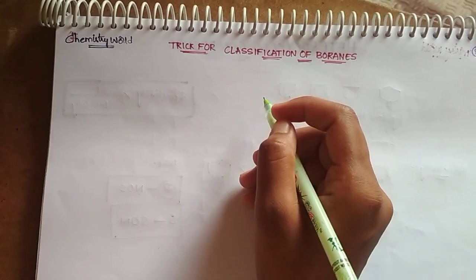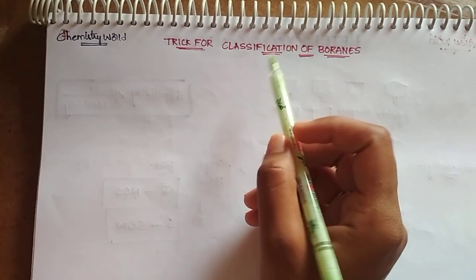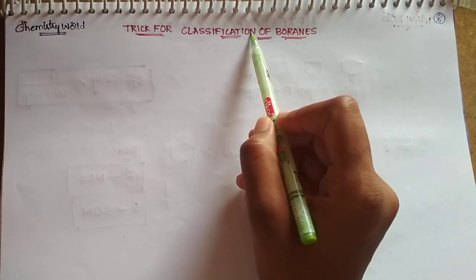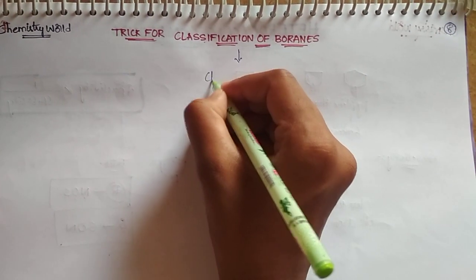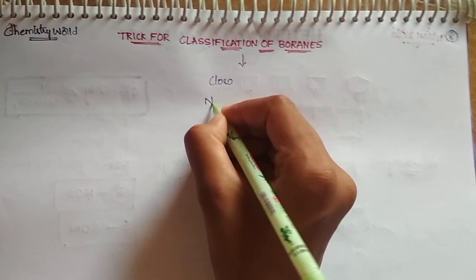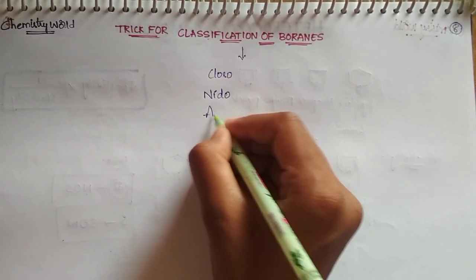Hello students, welcome to the chemistry world. Today I'm going to discuss a trick for classification of boranes. There are three types of boranes, namely Closo, Nido, and Arachno.